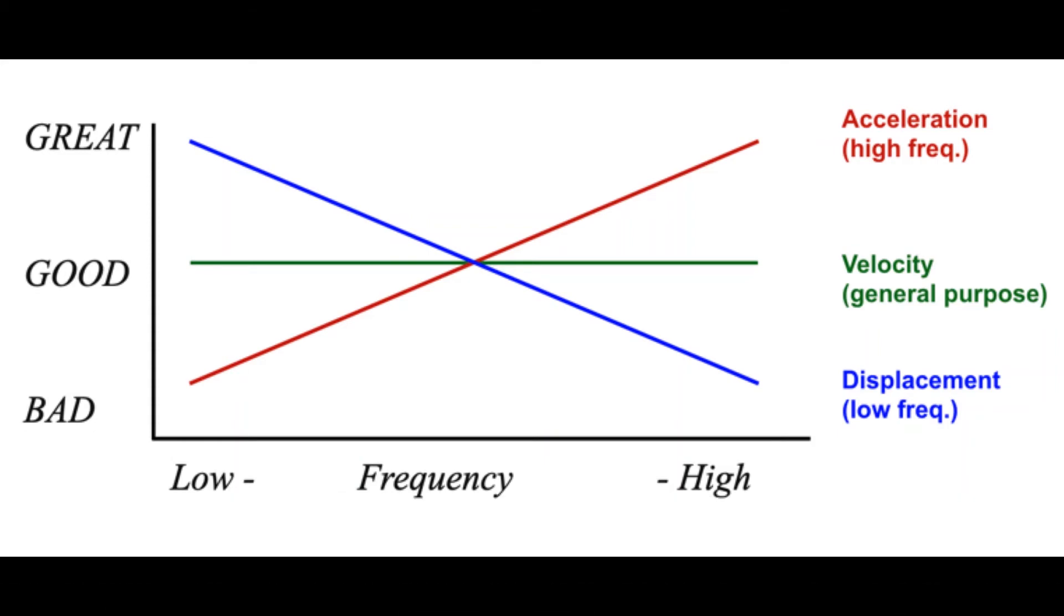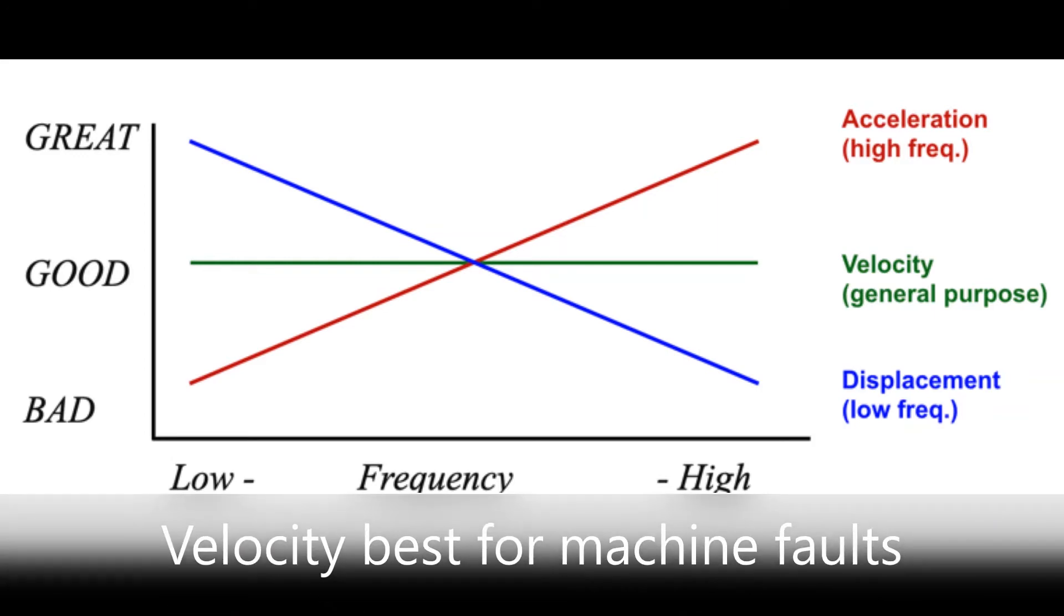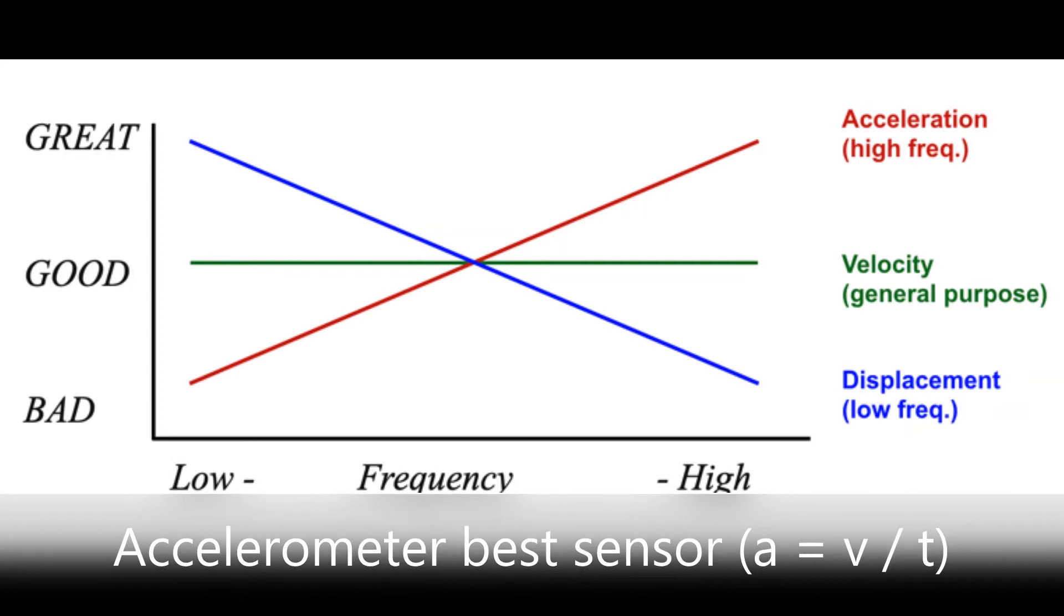Which method is best? Velocity covers the widest range of frequencies for most machines and best for diagnosing the forces of fatigue that cause wear and eventual failure. Solution? It is the most common to use an accelerometer and then quickly convert from acceleration to velocity.